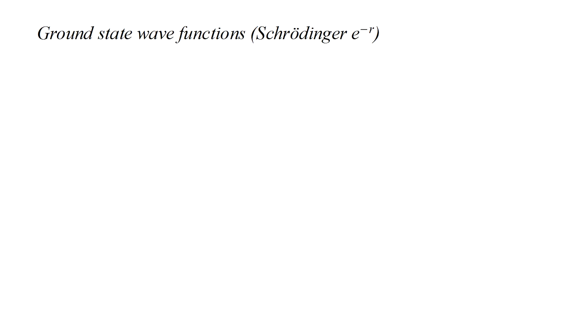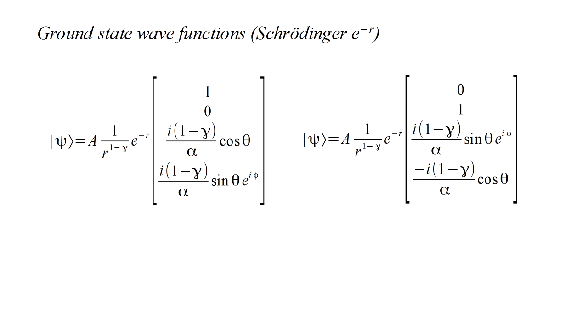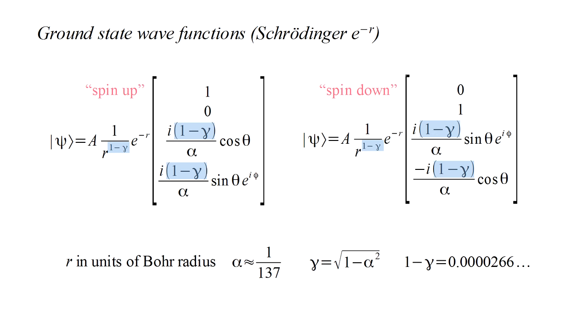Let's look at the details of the ground state, 1s wavefunction. The Schrodinger solution is e to the minus r. There are two Dirac solutions. These have the same energy, but different spinners. Note that for compactness, we don't show the time dependence factor. The radius r is measured in units of the Bohr radius. Alpha is the fine structure constant. And gamma is square root 1 minus alpha squared. This appears in several places as 1 minus gamma, which is a very small number. If it were zero, then these would be identical to the Schrodinger solution with a spinner for either spin-up or spin-down.